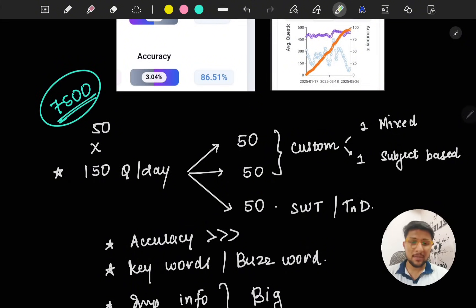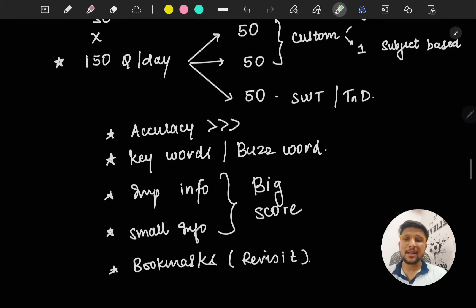Divide that into three slots: 50 in the morning, 50 in the noon, and 50 in the evening. One custom module should be mixed bag, no doubt, because this will help your brain adapt to random questions. In the exam, questions won't come in sequence - they'll come randomly, and you should be wired to answer any type of question. One custom module should be subject-based, whatever subject per day. And one, if you're doing a subject-wise test at the end of the day, that also counts as 50 questions. Basically, total questions should reach 150.